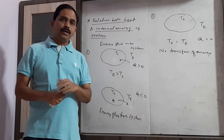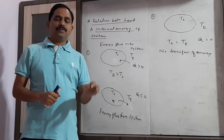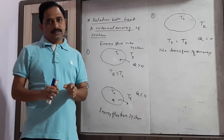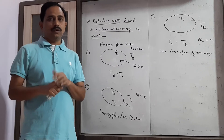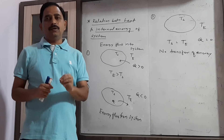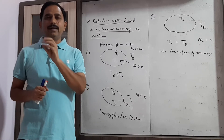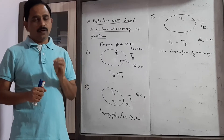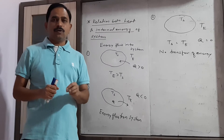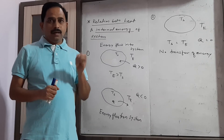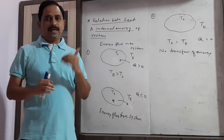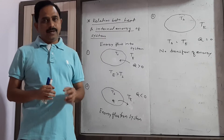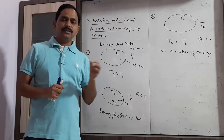So let us quickly review. The thermodynamic system is the collection of a large number of particles — that may be atoms or molecules — having some values of pressure, volume and temperature. It is also the collection of a large number of objects which has the ability to exchange heat between the system and its surrounding or environment.